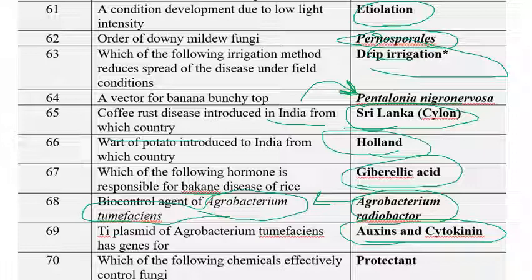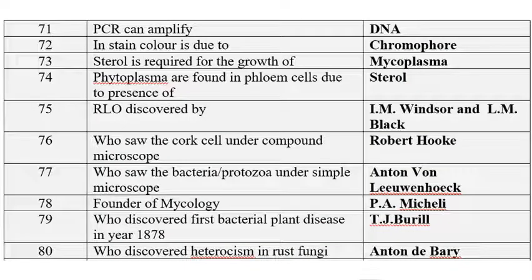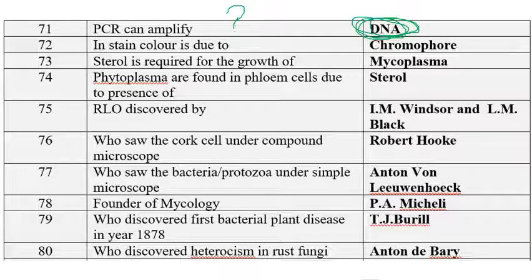A protectant chemical can effectively control fungal diseases. The next one: PCR can amplify — in this paper the answer given is DNA alone, though some sources say PCR can amplify both DNA and RNA. There is a discussion point here; most lecturers state PCR can amplify both DNA and RNA, but standard PCR amplifies only DNA. If you know, please comment below.